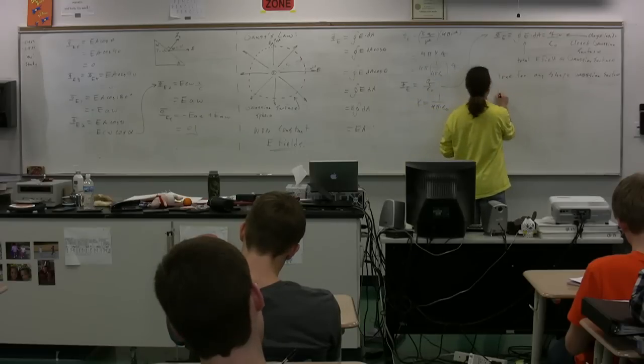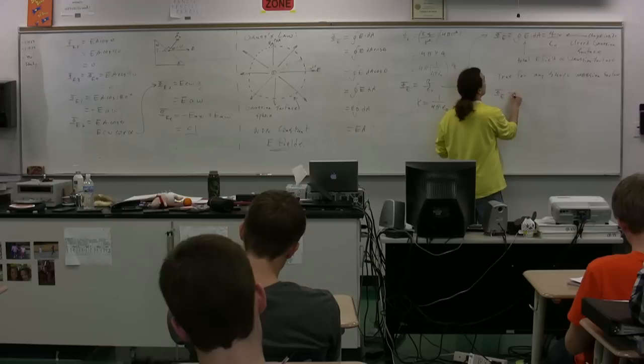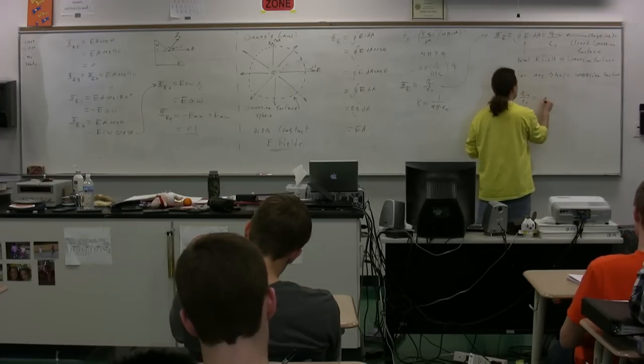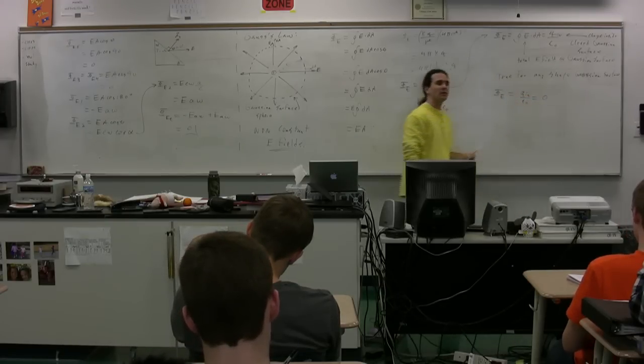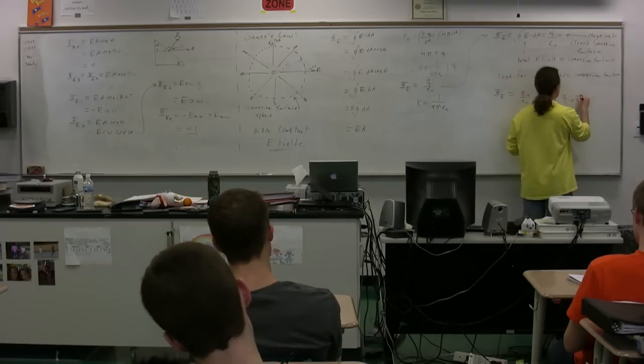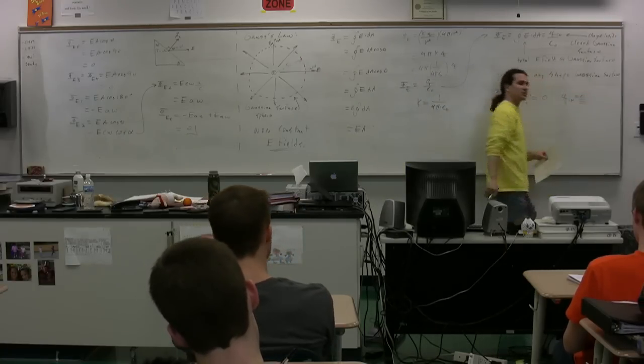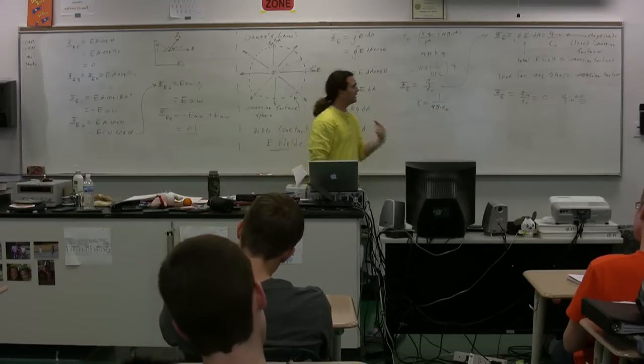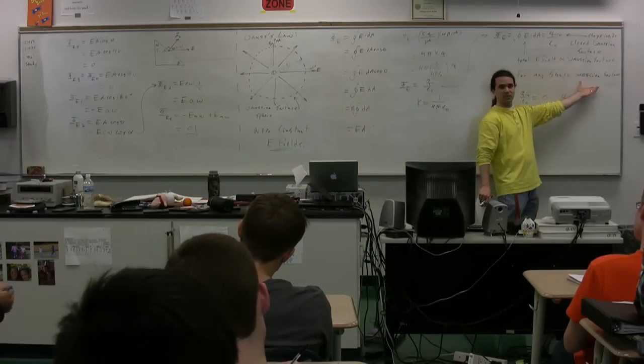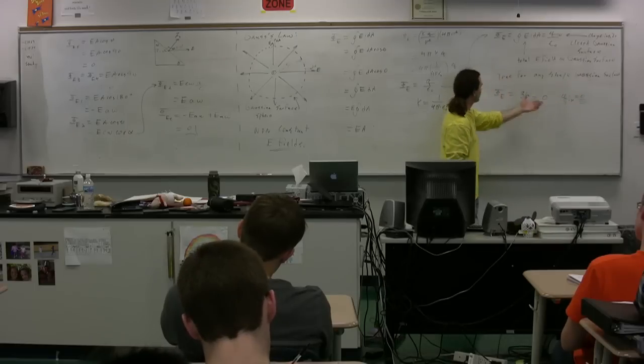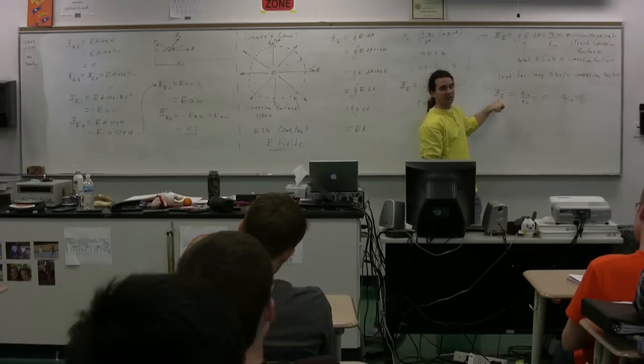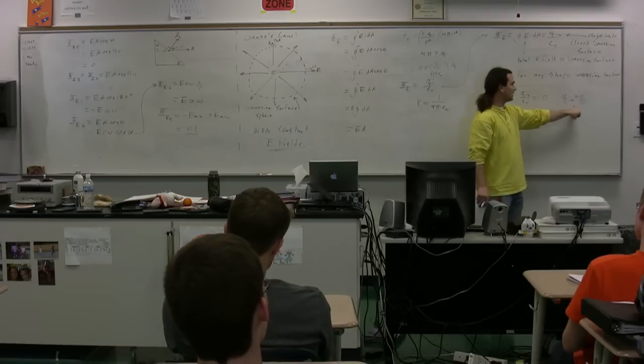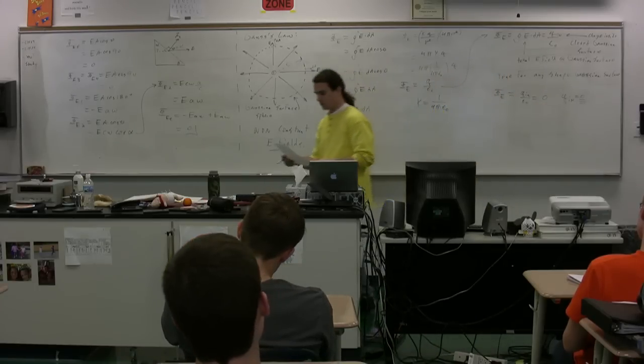Notice that the electric flux, which is equal to Q inside divided by epsilon-naught, is going to be equal to zero if the charge inside the closed surface is equal to zero. Which is exactly what we just went through with the previous problem. In the previous problem, we basically had picked an oddly shaped Gaussian surface, and we proved that the electric flux going through that Gaussian surface added up to zero. And the reason for that is because the charge inside that Gaussian surface was zero.